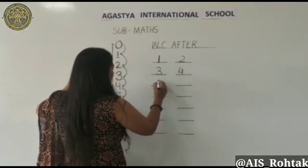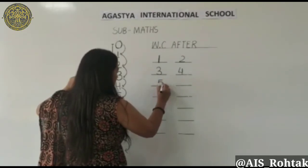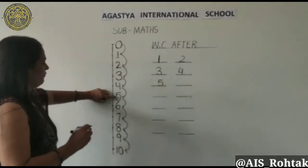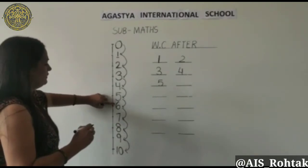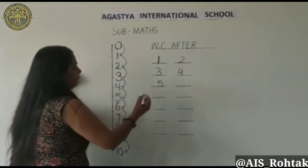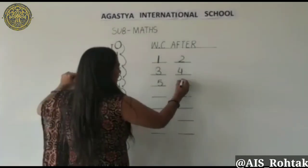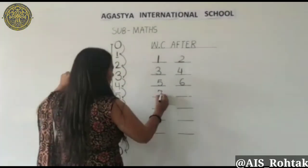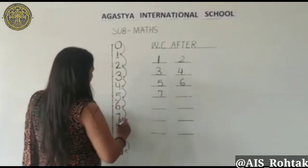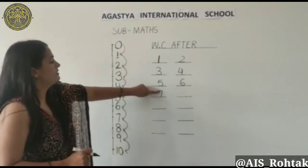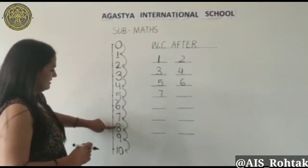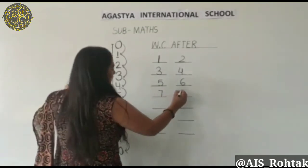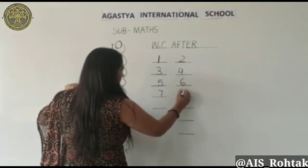And what comes after 5? After 5? 6. After 5, 6 is there. There we write 6. And now tell me, what comes after 7? After 7 is 8. We write 8 here.